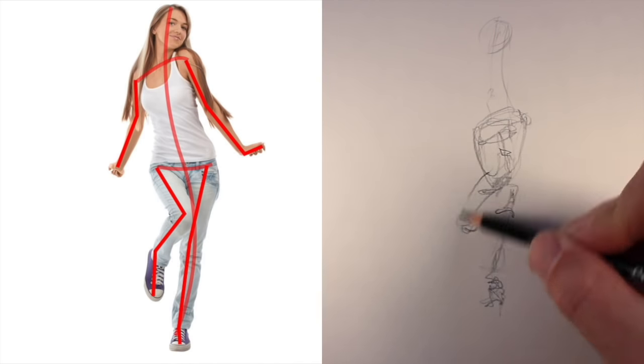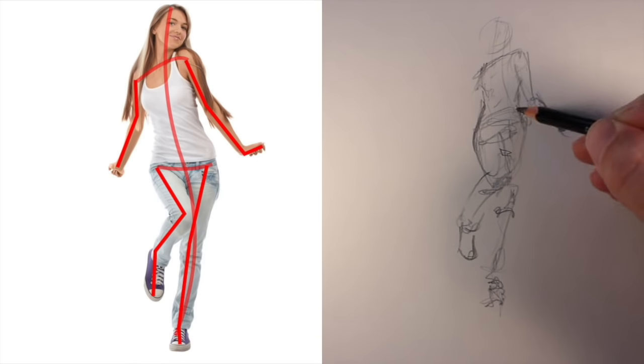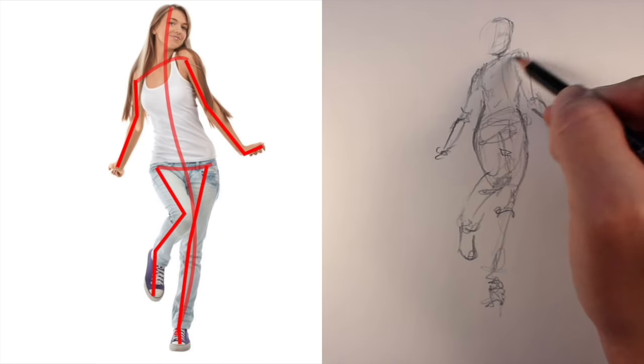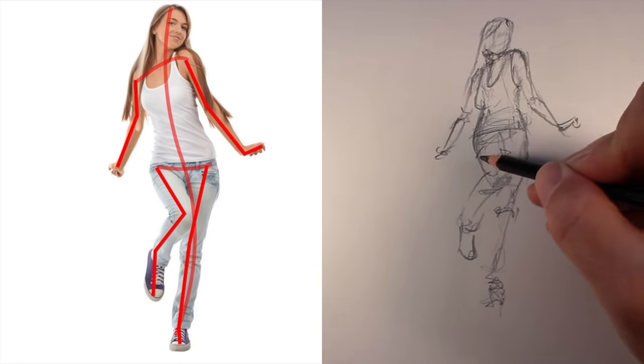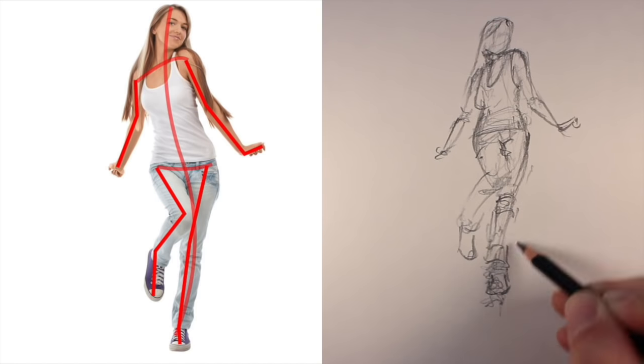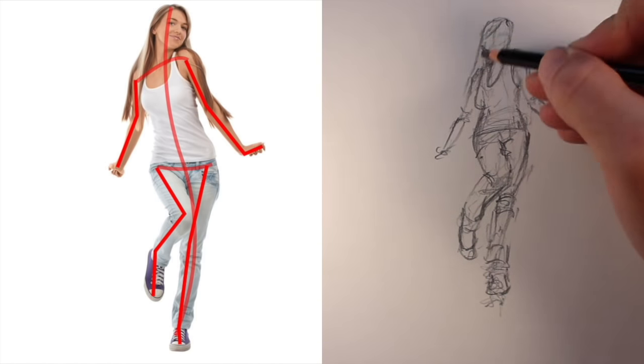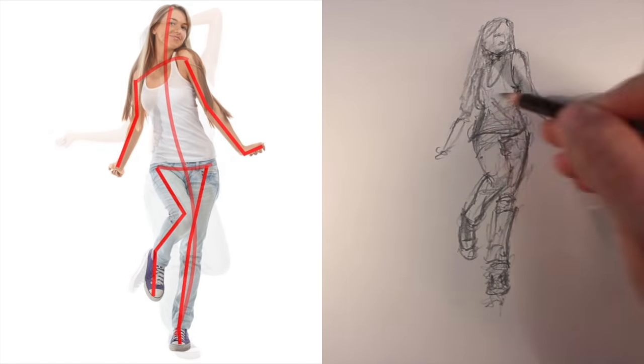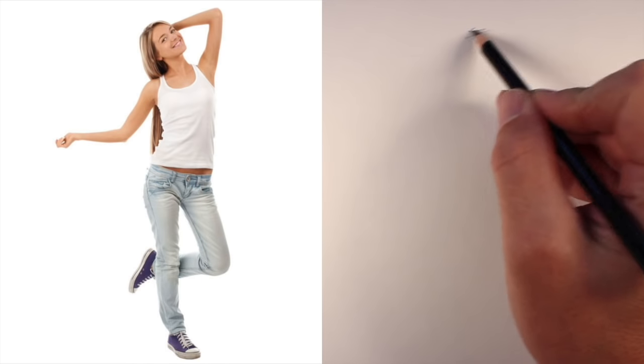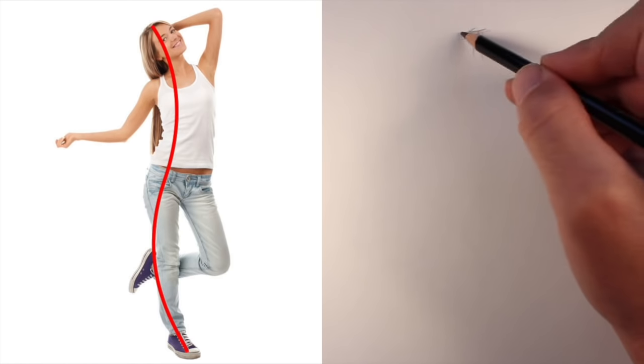Another exercise you could do is to go to a place where there are a lot of people. This could be your local mall or maybe a park, anywhere where lots of people gather. Sit down with your sketchbook and try to create as many gesture drawings as you can. Of course, your subjects will be constantly moving, so that makes the challenge even greater, but you'll be surprised at how many sketches you can create and how accurate you can be with your illusion of form.